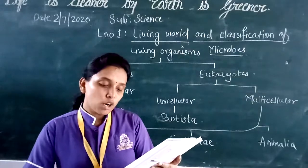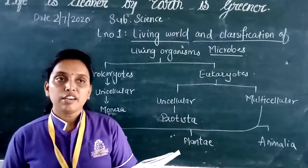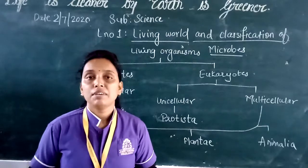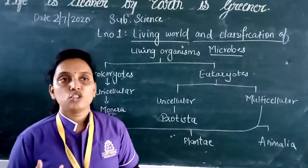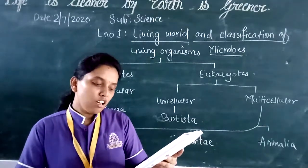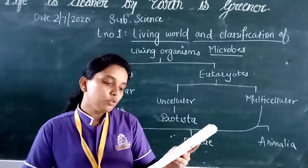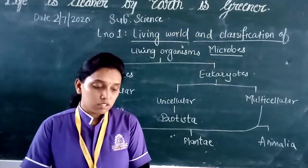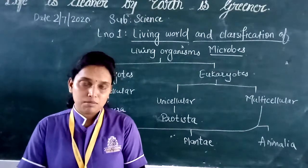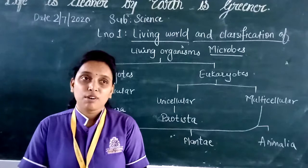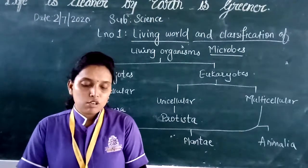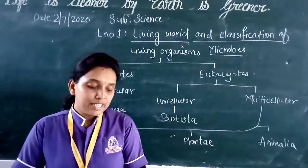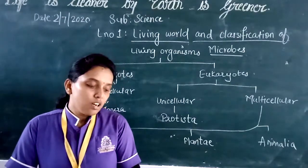Kingdom Fungi: take a moist piece of bread or bhakri, keep it in a covered container for two or three days. You will see a whitish, cotton-like layer formed on it — that is the fungus. Characteristics: fungi are non-green, eukaryotic, heterotrophic organisms. Most are saprophytes that depend on decaying matter. Their cell wall is made up of a tough complex sugar called chitin. Some fungi are thread-like with many nuclei in the cytoplasm. Examples include baker's yeast, Aspergillus, Penicillium, and mushroom.